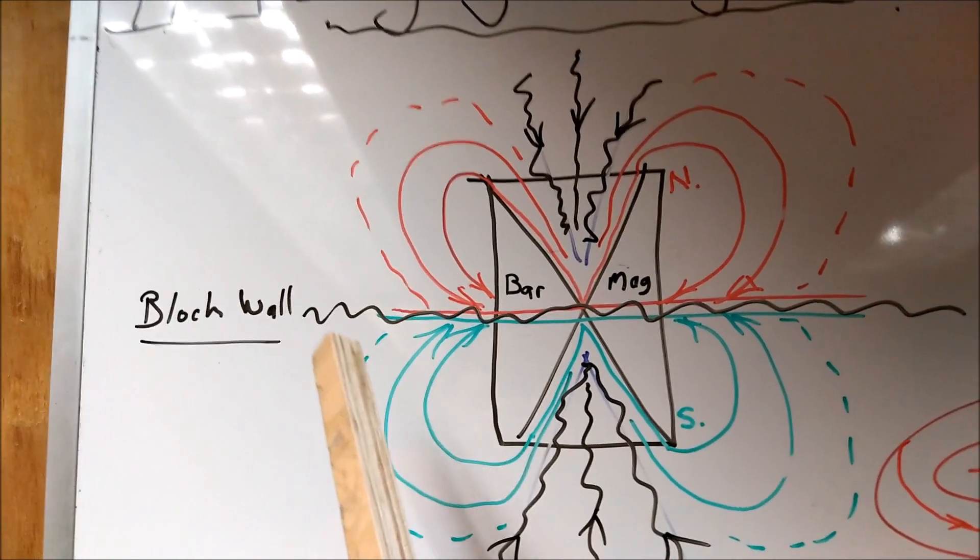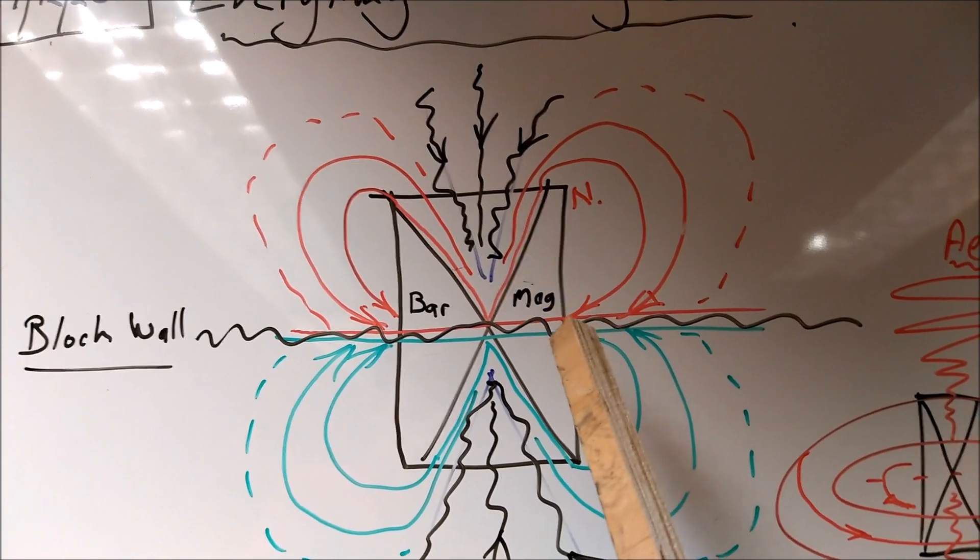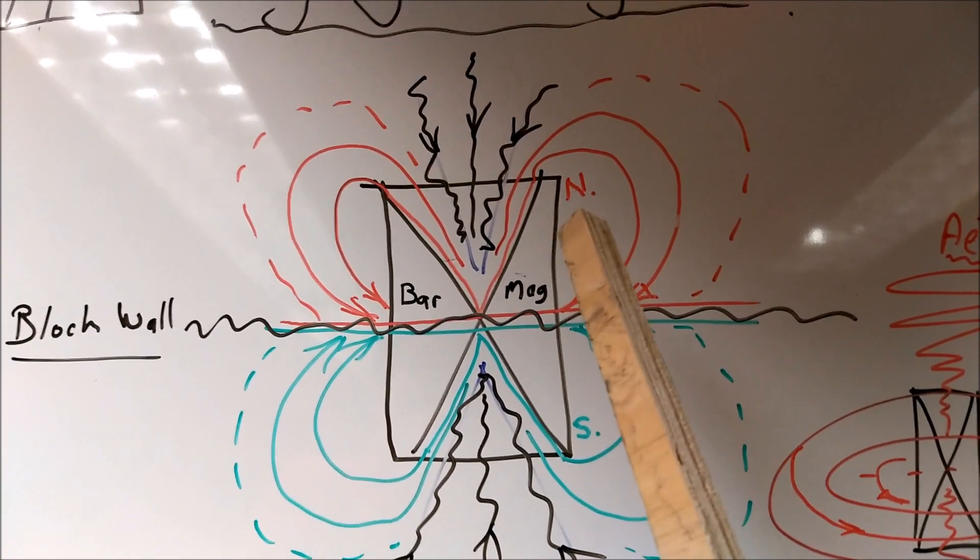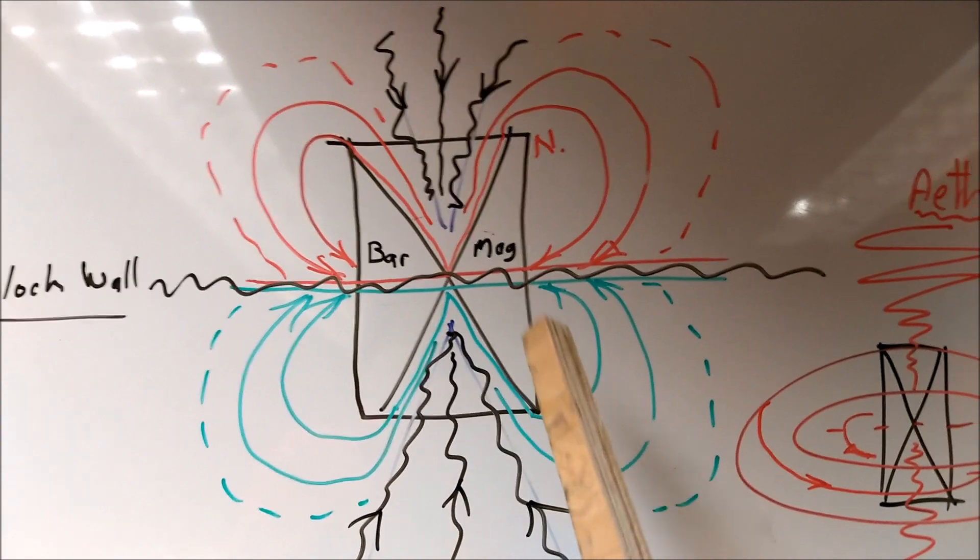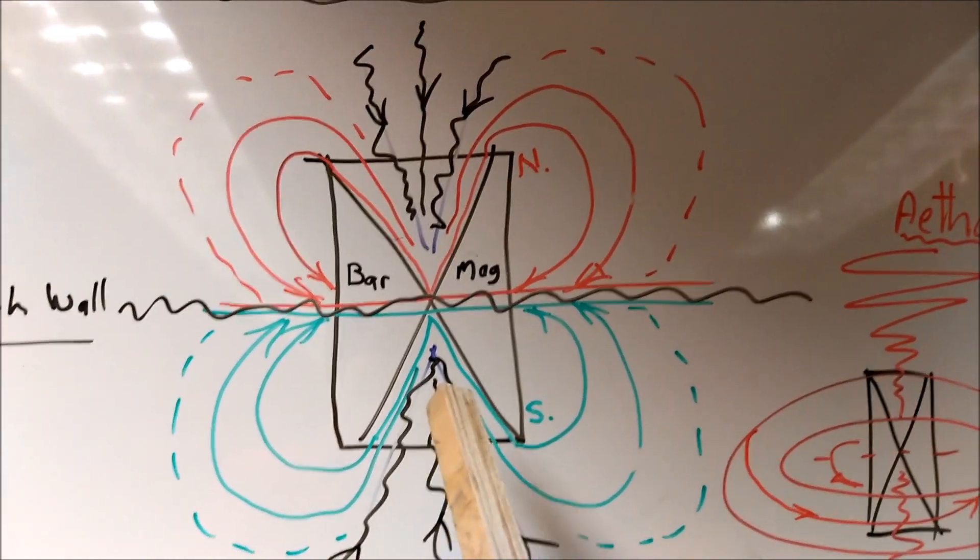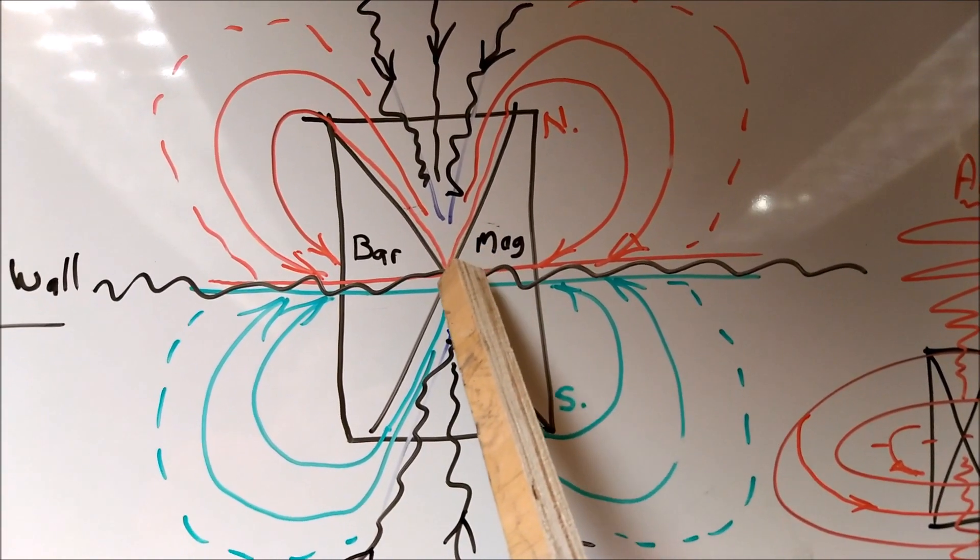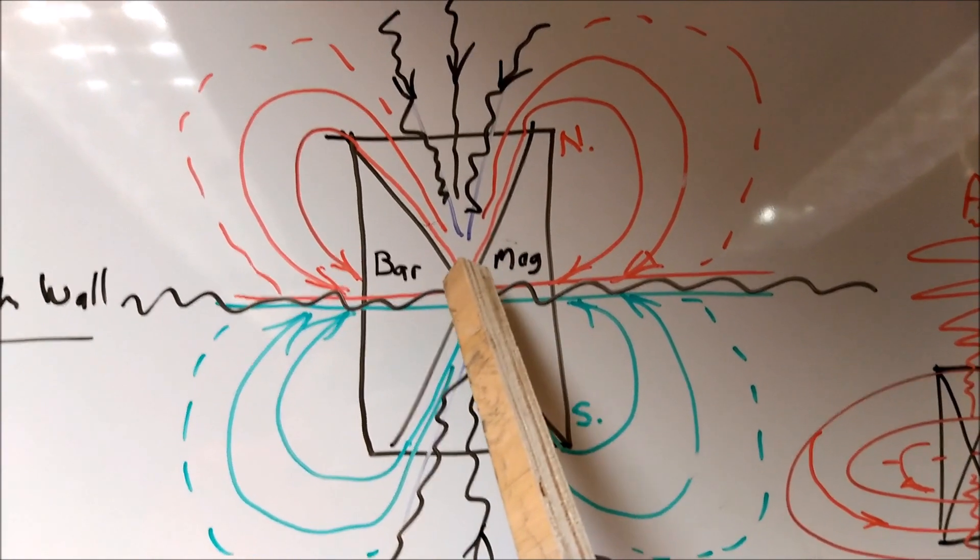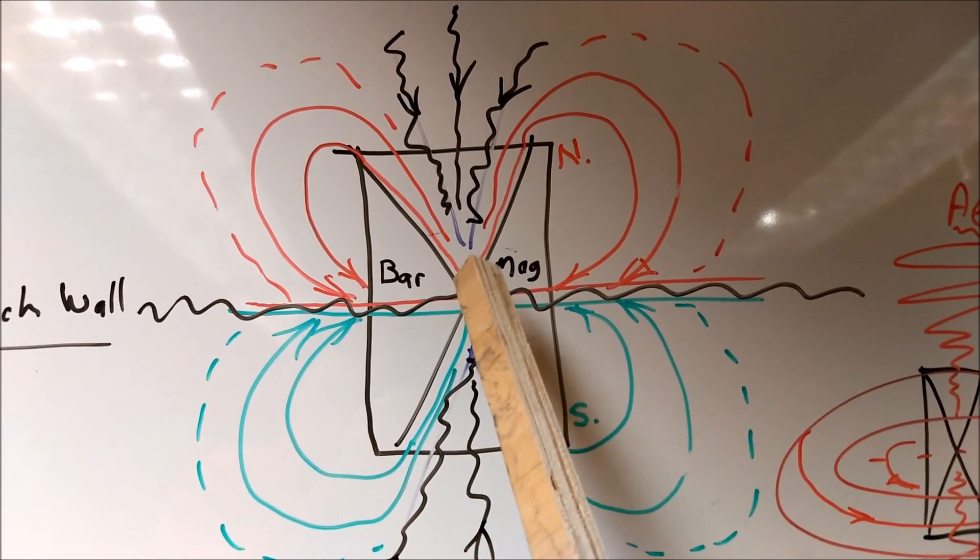In the middle we've got the Bloch wall, so the north field and the south field are two separate entities. What I'm focused on now is the Bloch wall right at the center between the magnetic and the dielectric.